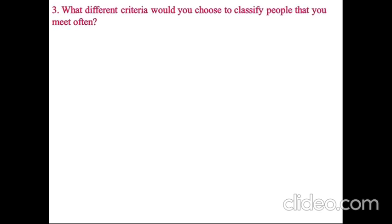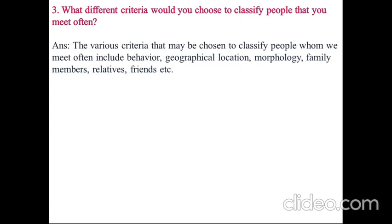What different criteria would you choose to classify people that you meet often? The various criteria that may be chosen to classify people whom we meet often include behavior, geographical location, morphology, family members, relatives, friends, etc.